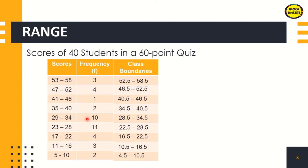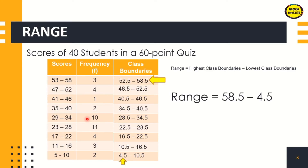Now, how are we going to identify the range? In identifying the range, just get the difference of the highest class boundary minus the lowest class boundary. In this example, the highest class boundary is 58.5, subtract by the lowest class boundary which is 4.5. So 58.5 minus 4.5, we have 54. Therefore, the range of this grouped data is 54.